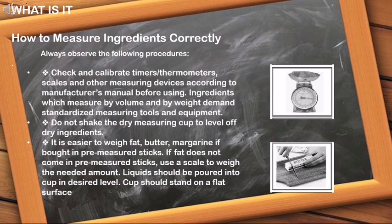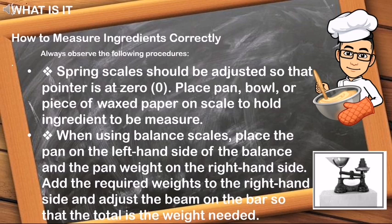Ingredients measured by volume and by weight demand standardized measuring tools and equipment. Do not shake the dry measuring cup to level off dry ingredients. It is easier to weigh fat, butter, or margarine if bought in pre-measured sticks. If fat does not come in pre-measured sticks, use a scale to weigh the needed amount. Liquids should be poured into the cup to the desired level; the cup should stand on a flat surface. Spring scales should be adjusted so that the pointer is at zero before placing a pan, bowl, or piece of waxed paper on the scale.